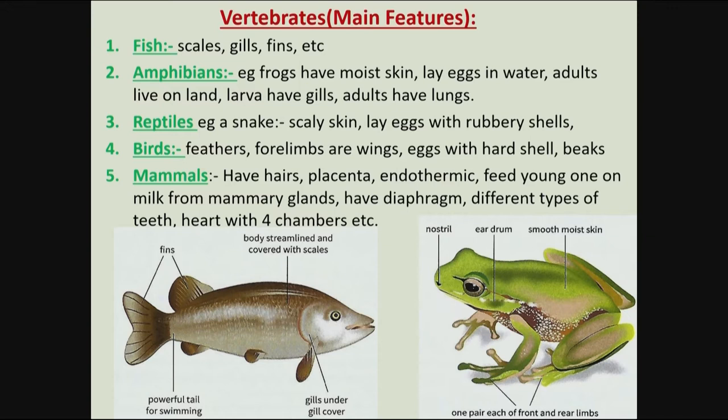Starting with the classification of vertebrates — these are animals with backbones. The first group are fish. The main features of fish are: they have scales, they breathe using gills, they have fins for moving in water, and their bodies are normally streamlined.